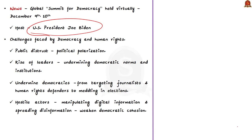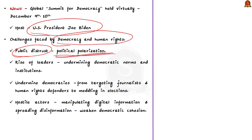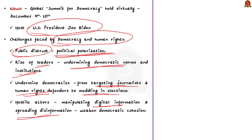In the past few years, democracy and human rights are facing serious threats around the world. Many democratic institutions face serious challenges from within and outside their countries. The public is also losing trust in democracy, fueling political polarization. Many global leaders are now undermining democratic norms and institutions, targeting journalists and human rights defenders, meddling in elections, and manipulating digital information to spread disinformation. There has been an increasing trend of authoritarianism in the global order.